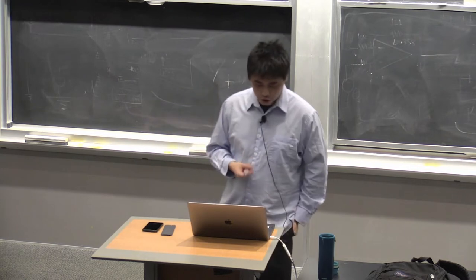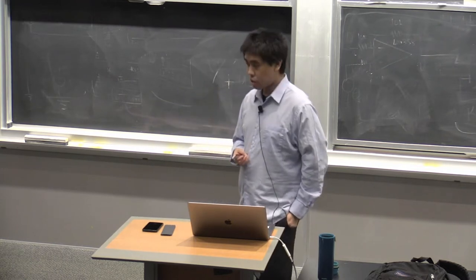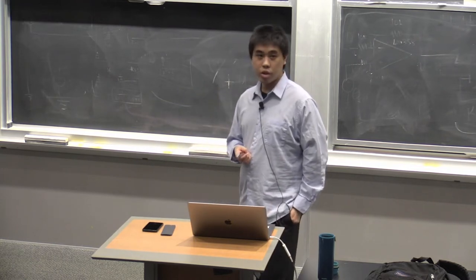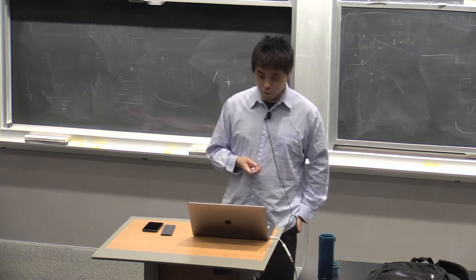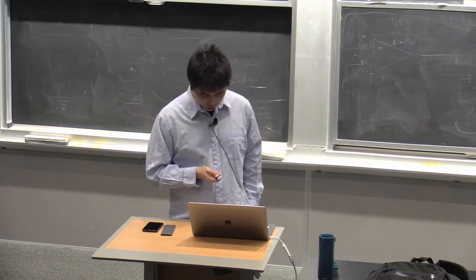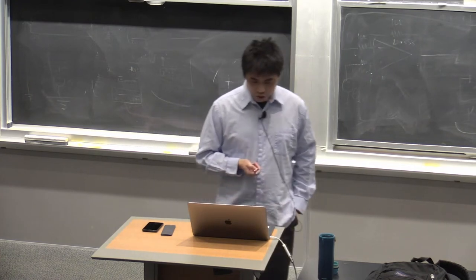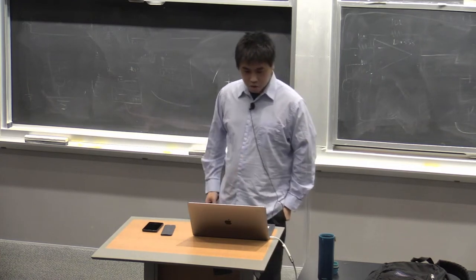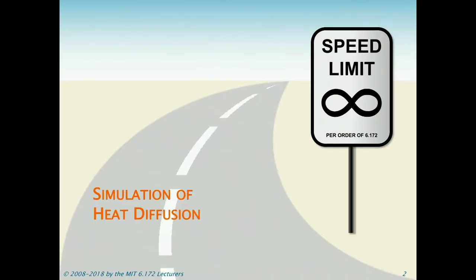Today we're going to talk a lot more about cache-oblivious algorithms. Last time we talked about one cache-oblivious algorithm for matrix multiplication, and today we're going to talk about some other ones. The first example is simulation of heat diffusion.